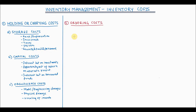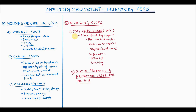Now let us look at the second type of inventory costs, which is ordering cost. Every time a firm places a new order it incurs ordering cost, which is the cost of preparing a purchase order for the supplier, or if you are producing in-house, a production order for the shop. For example, the buyer spends time to decide how much to order, selection of a supplier, and negotiating the terms, then the buyer will spend time in paperwork, follow-up, and receiving the inventory.